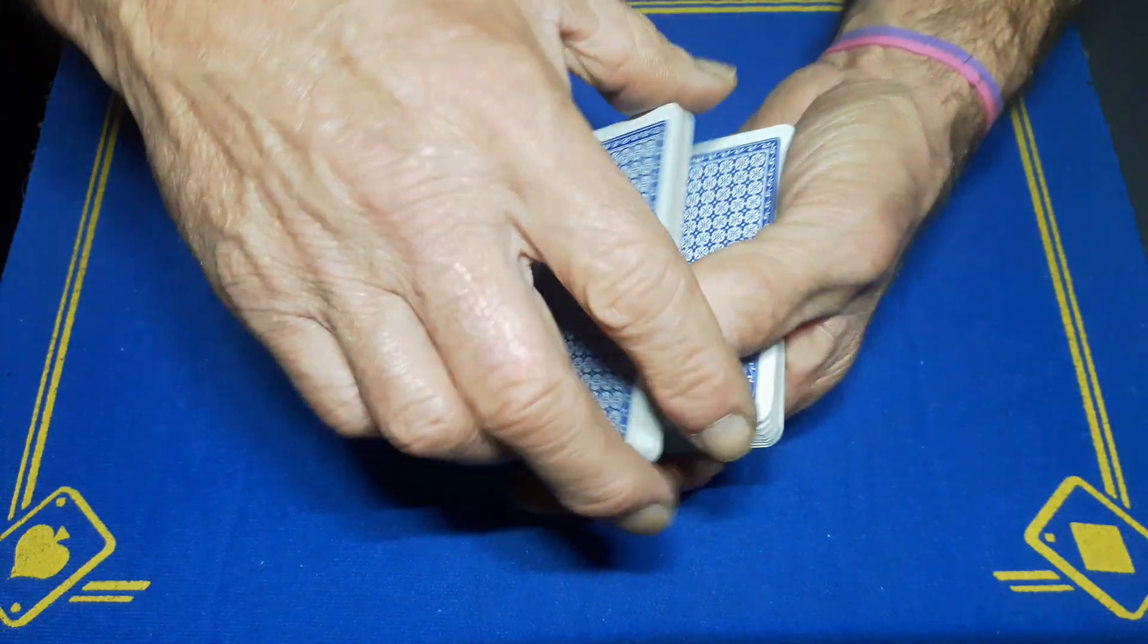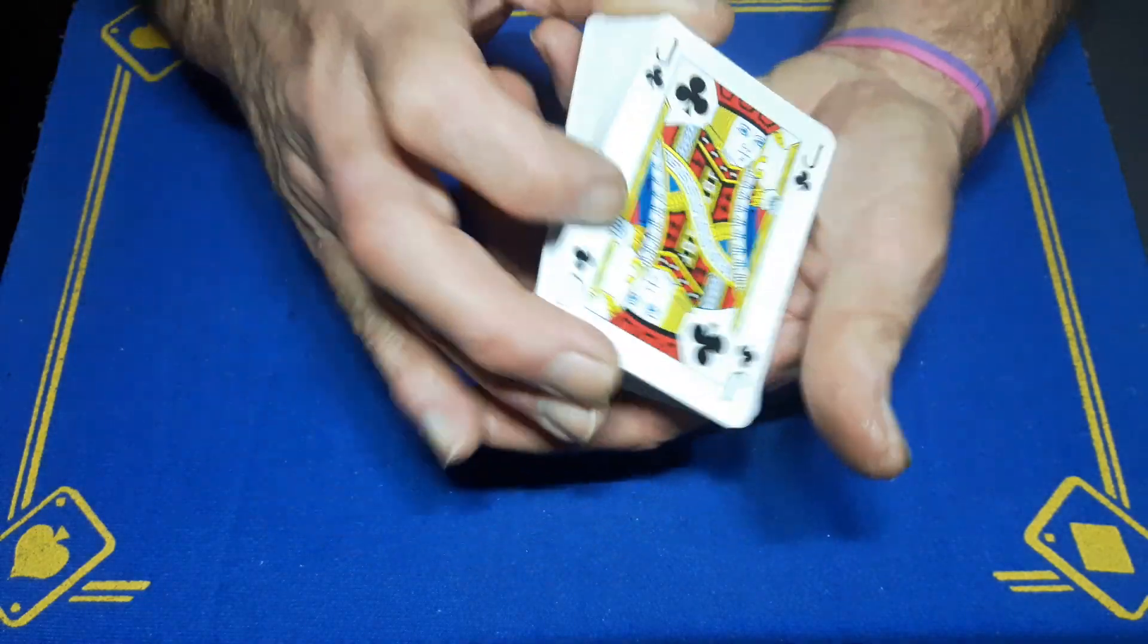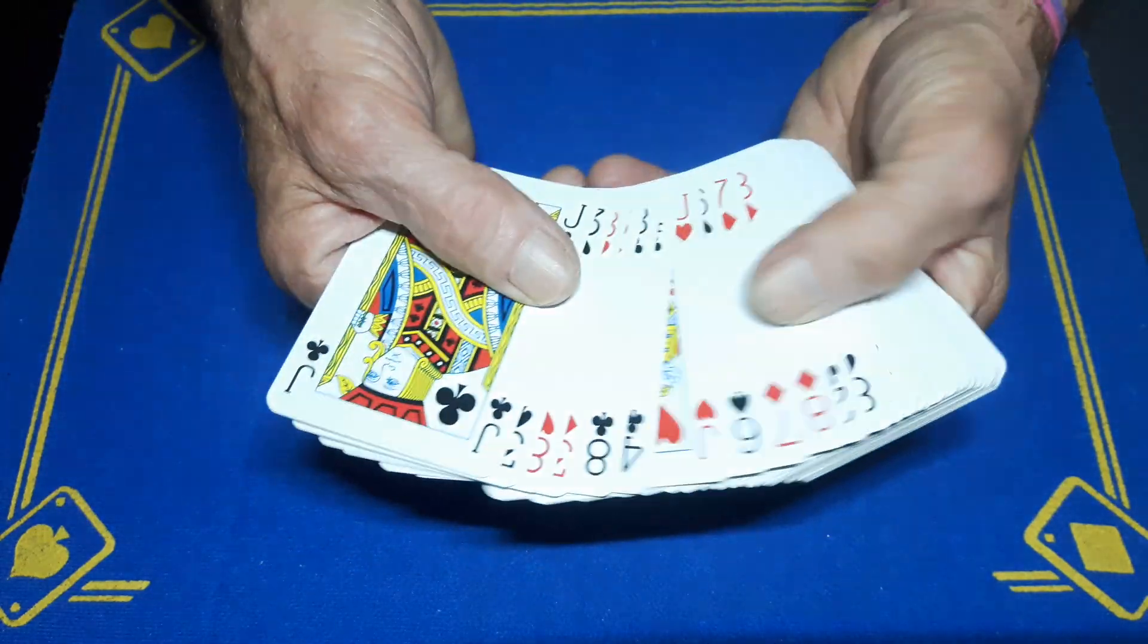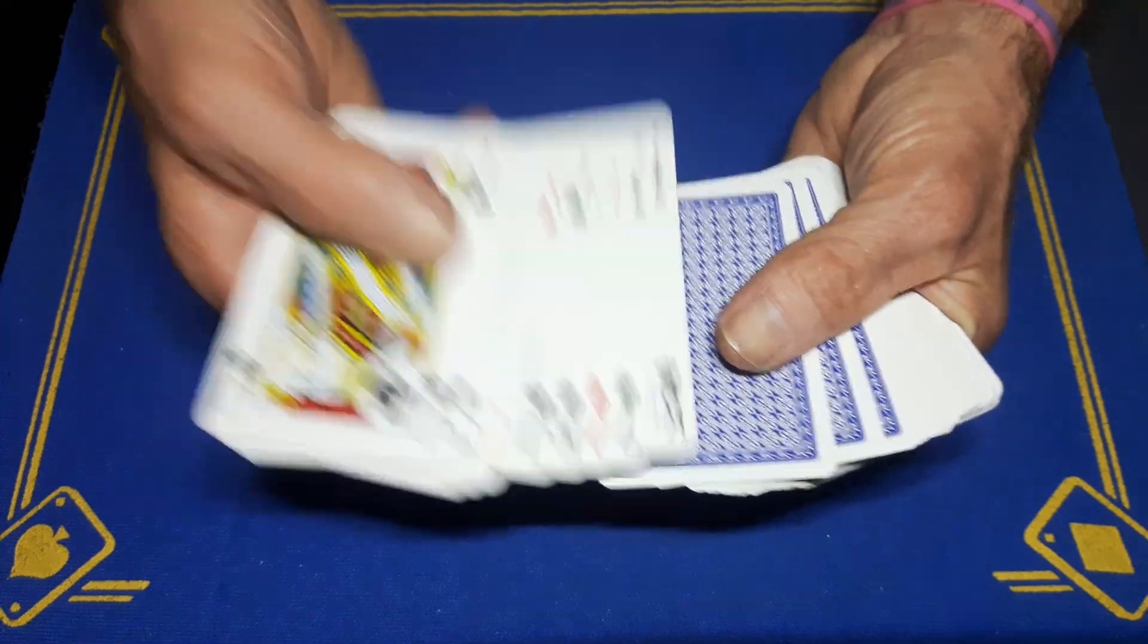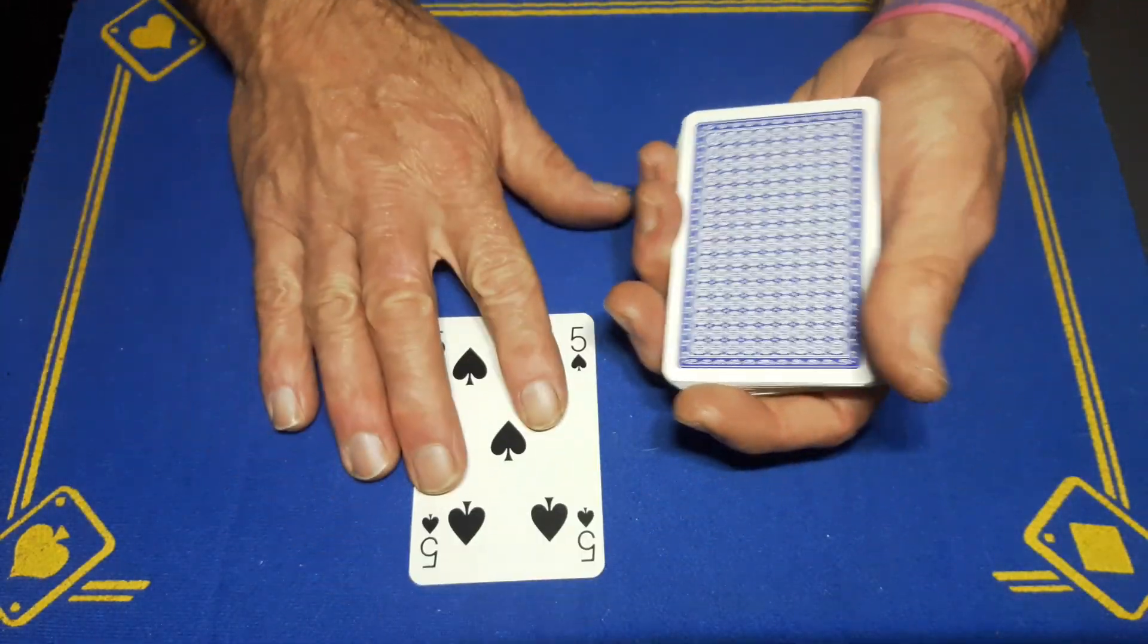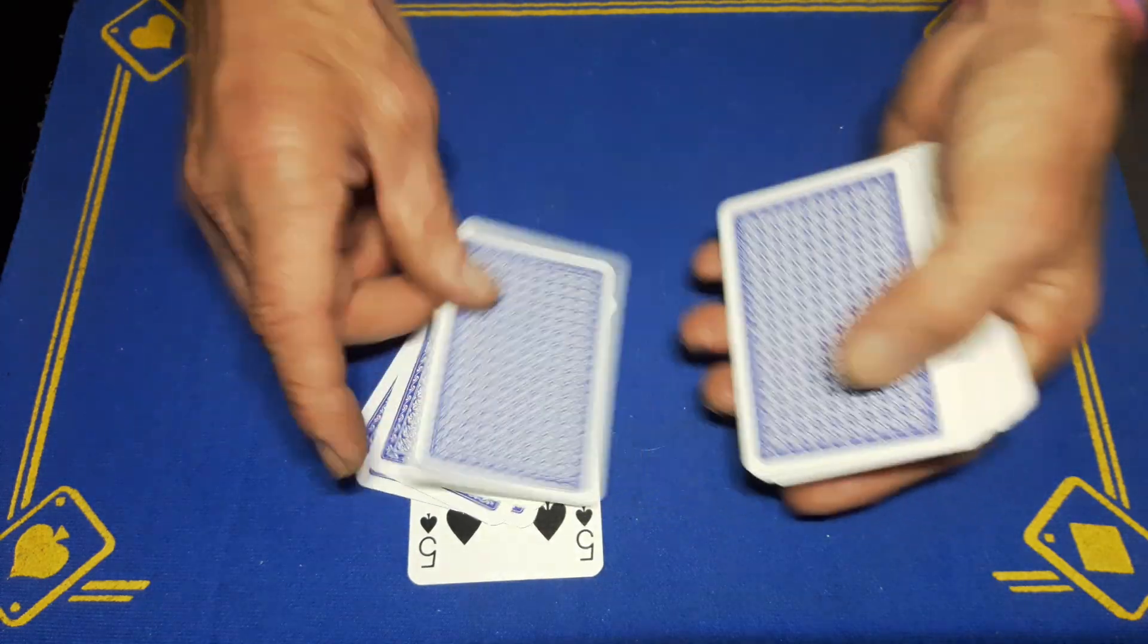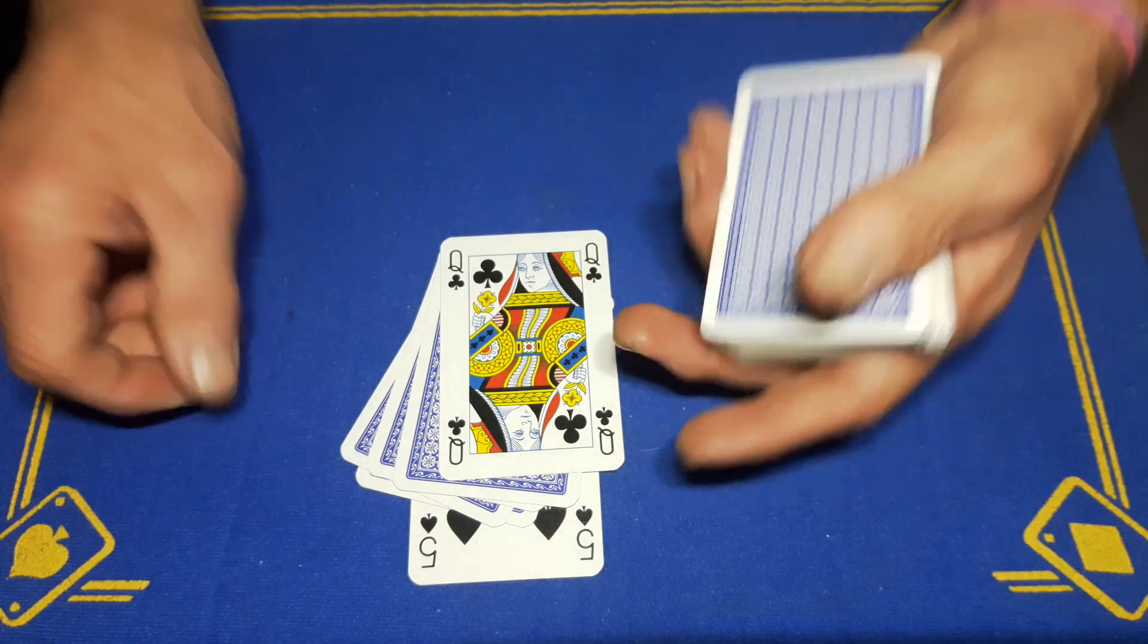And they will cut about a third of the packet, turn them face up, cut about two-thirds of the packet, turn all those face up, spread through, and the first face-down card we come to will be an indicator card. In this case it's a five, so deal five more cards - one, two, three, four - and the fifth card will be the spectator's chosen card.